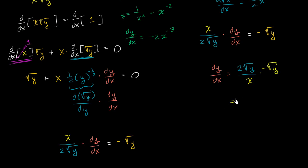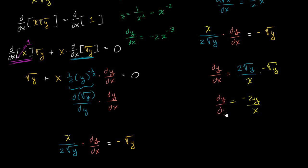What does this simplify to? The square root of y times the square root of y is just y. The negative times 2 gives us negative 2. So you get negative 2y over x is equal to the derivative of y with respect to x.